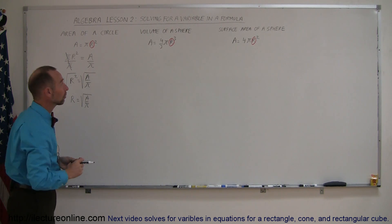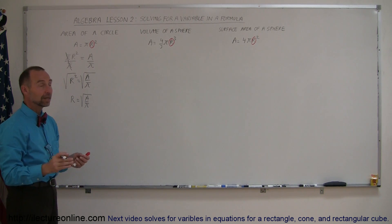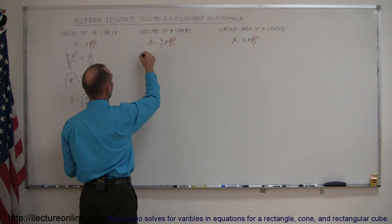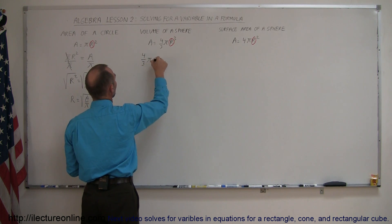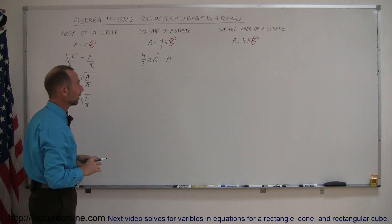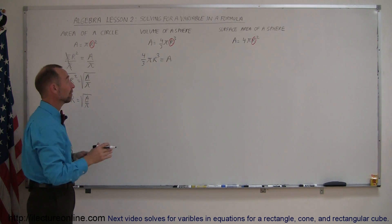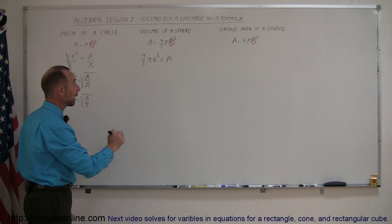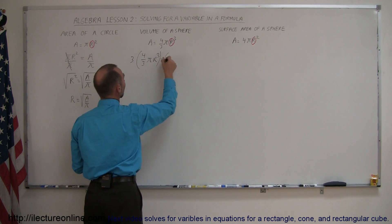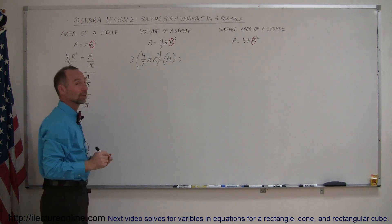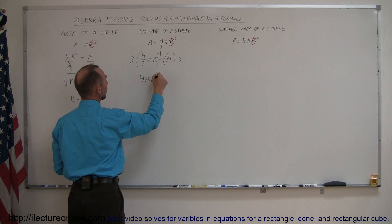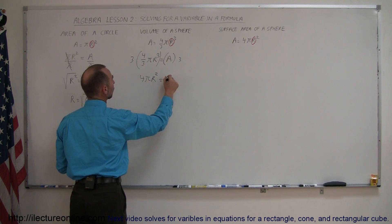Next equation: the volume of the sphere. Same thing — the variable we're looking for is on the right side of the equal sign, so we switch it to the left side. We have 4/3 pi r cubed equals A. In this case we have a fraction on the left side, so we multiply both sides by 3 to cancel out the 3 in the denominator. On the left side we end up with 4 pi r cubed equals 3A.